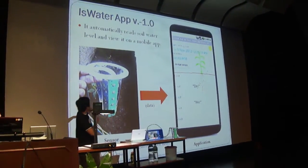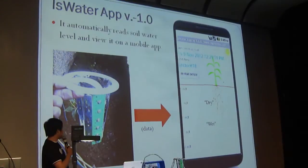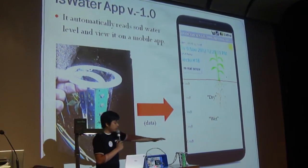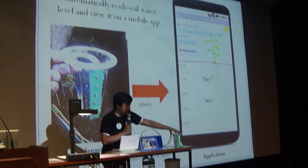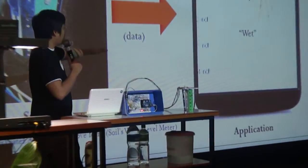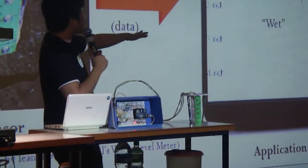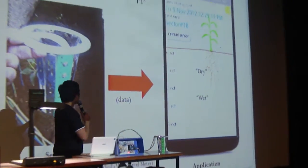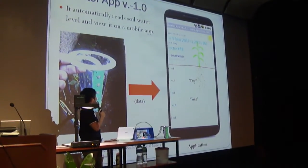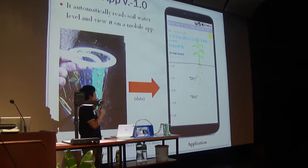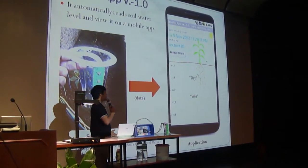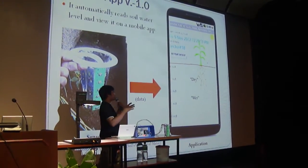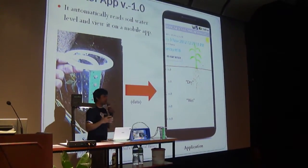Our system has two parts. The sensor part — for this presentation, it is just a basic sensor — and then the application part, wherein it uses the data from the sensor reading, so that farmers or researchers can build up other applications on top of those data for research.